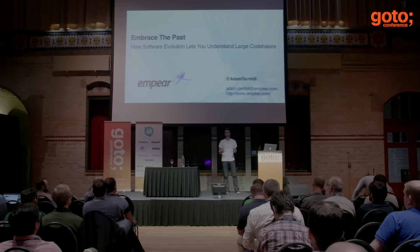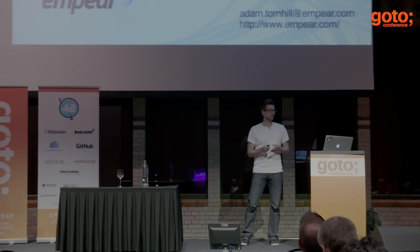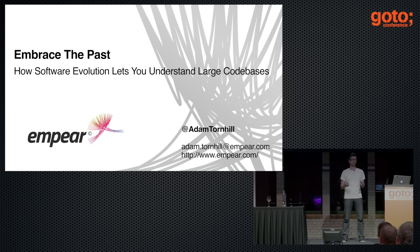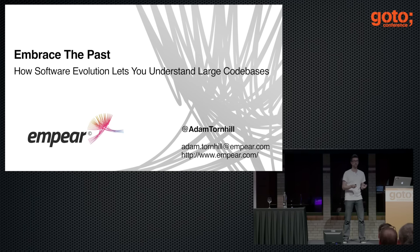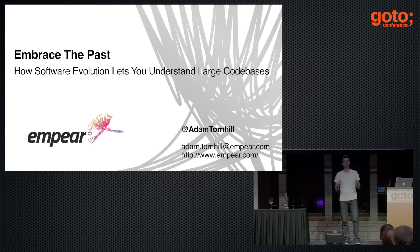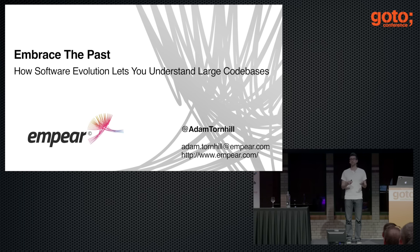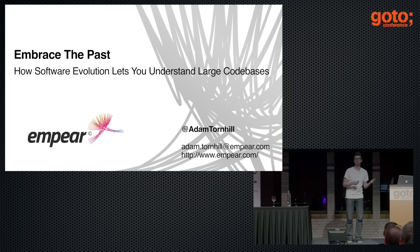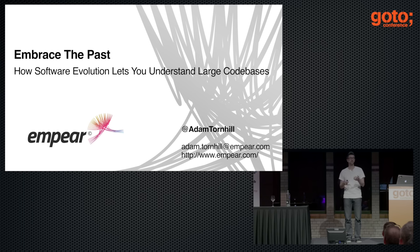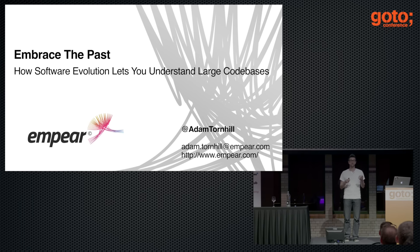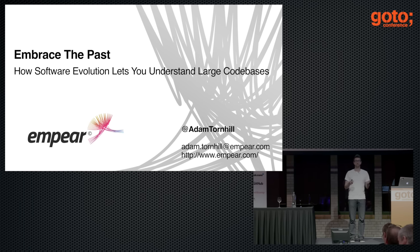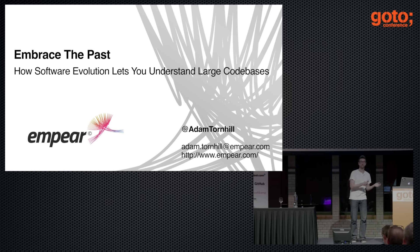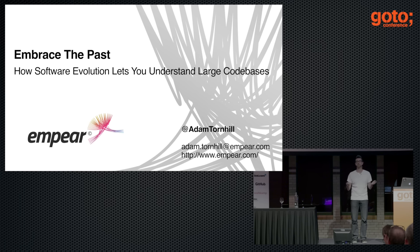Let's embrace the past. In this session, you will see how our past history helps us measure aspects of software development that we haven't been able to measure before. We will also see how that information helps us prioritize the improvements we need to do to our code, get insights into our designs based on how we have actually worked with the code, and reason about social aspects of software development — things like organizational problems or team productivity bottlenecks that show up in our code.